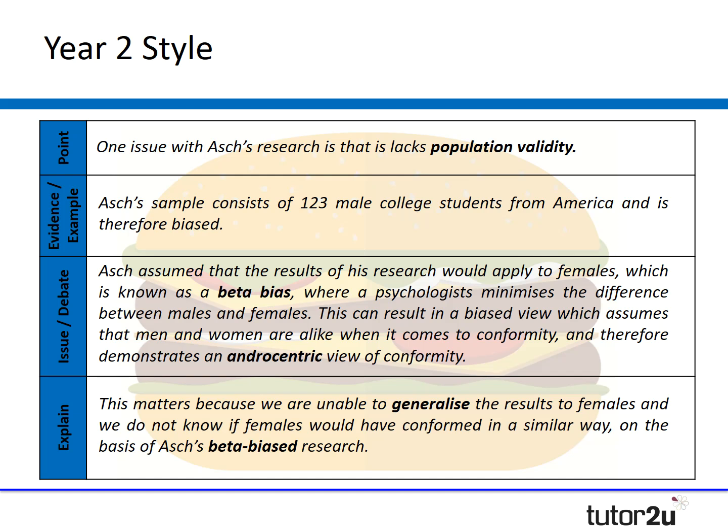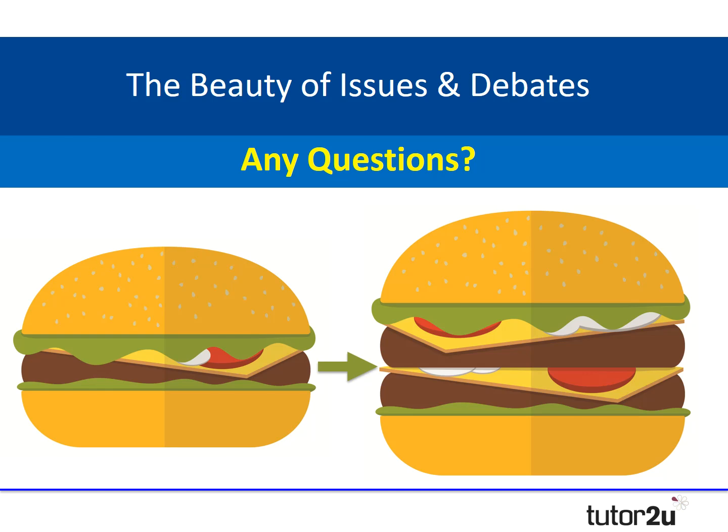The reason this double-whopper approach is so useful in year two is that you're increasing the number of evaluation points but in far fewer words. If you attempted to write more burger paragraphs — say four or five — that would take more words than embedding evaluation points into your existing ones. There is a key reason to embed issues and debates like this: it saves precious words and means you can write more quality content in far fewer words.